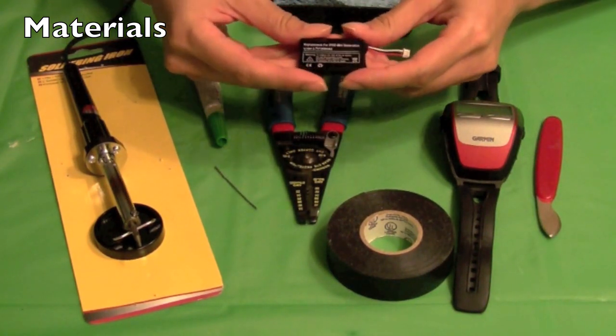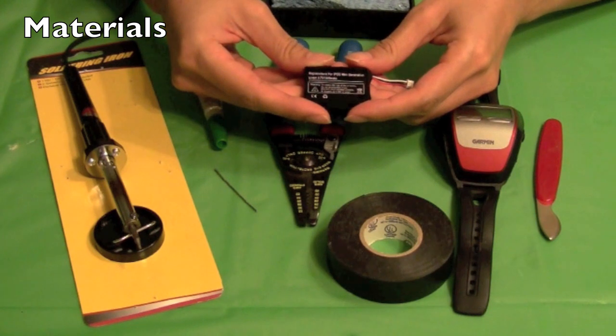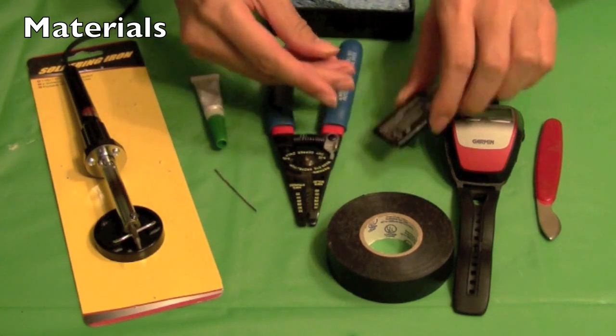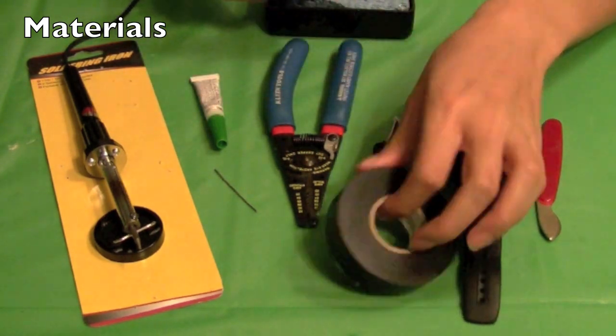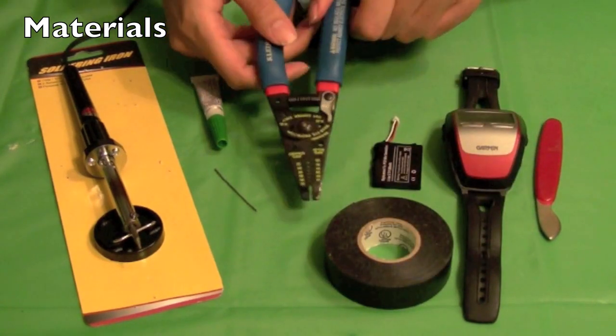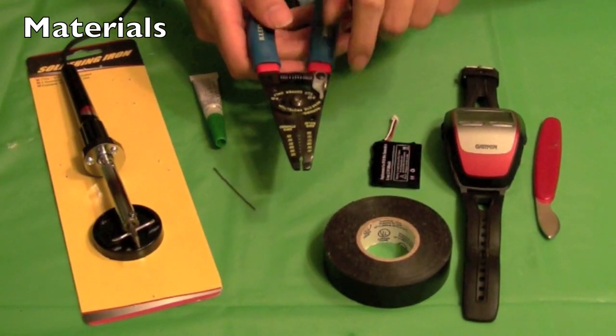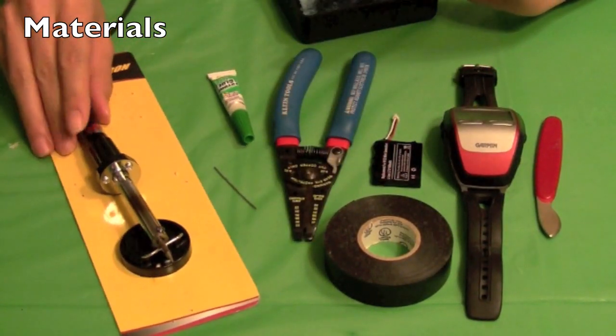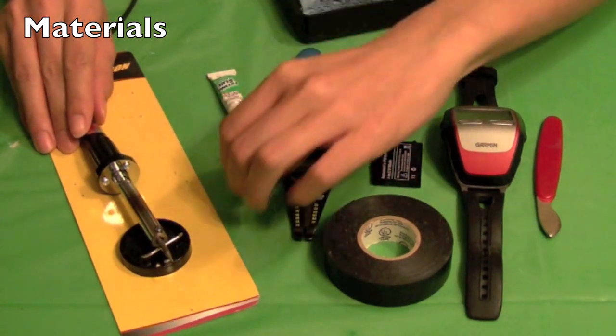In this video I'll be using a replacement for iPod Mini battery that I ordered from eBay. You'll need some electrical tape, wire cutter and wire stripper, and you'll need a soldering iron and soldering wire as well.